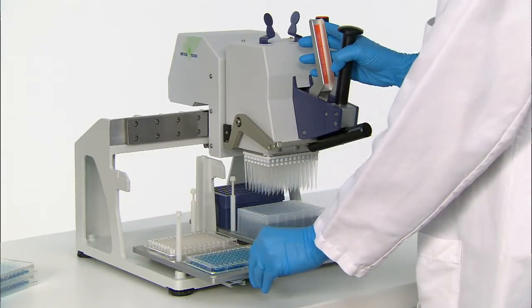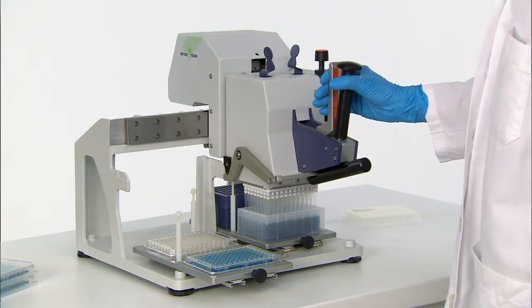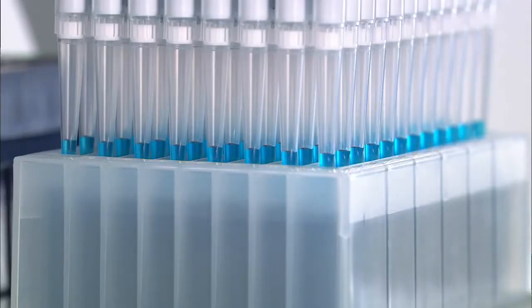The system is now ready to aspirate and dispense the liquid to the second 96-well plate. Move the left tray forward to place the second plate in the dispense position. Observe the absolutely level volumes in all tips.